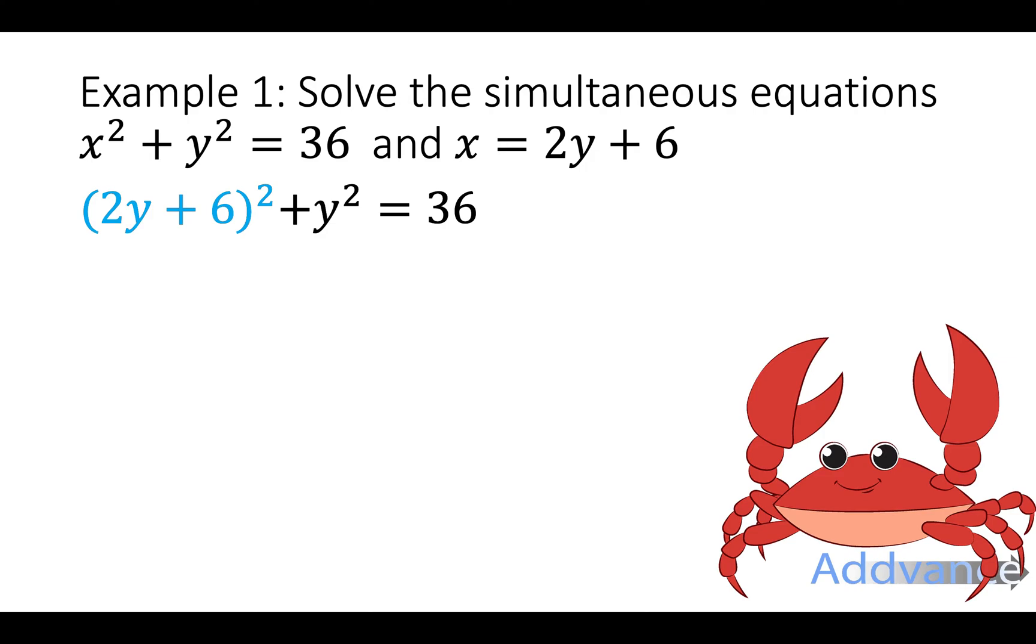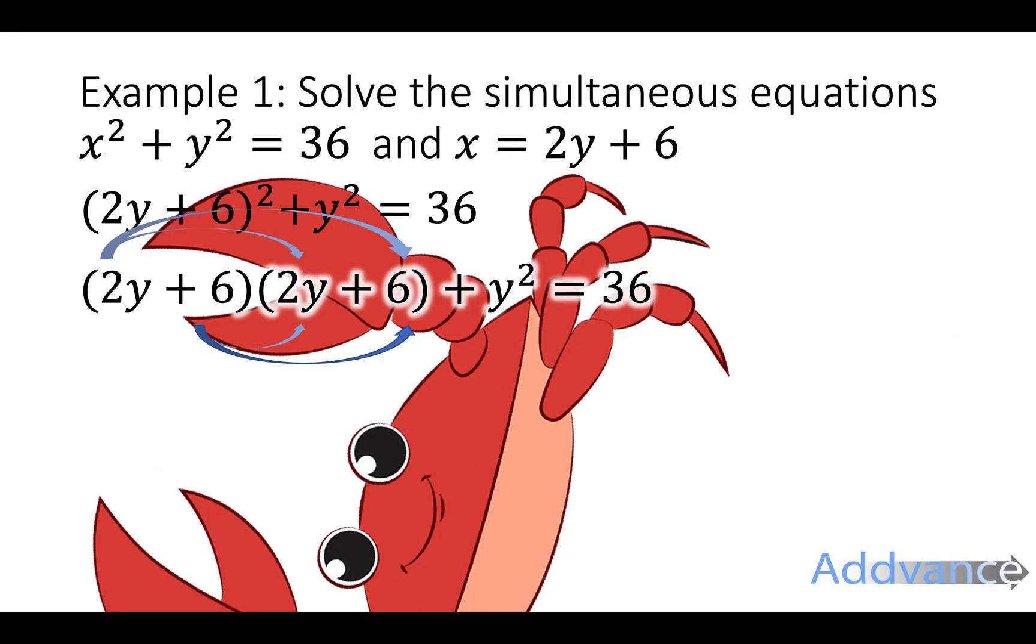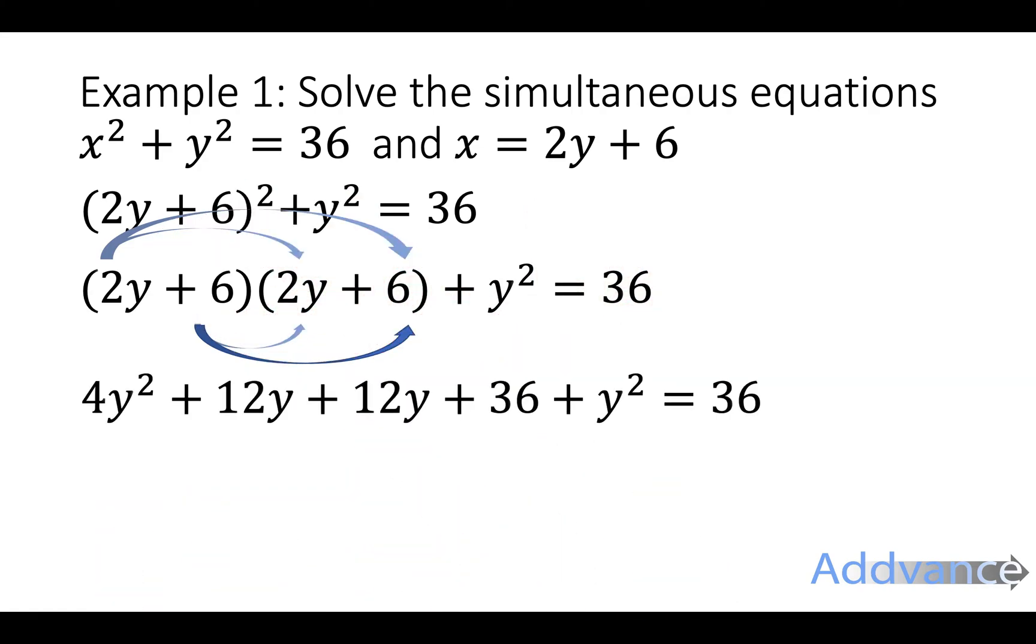And so we have a bracket that we're going to expand. So we use our crab claw method like this. And we're going to expand the bracket. We expand the bracket by doing 2y plus 6 times 2y plus 6 and we get 4y squared plus 12y plus 12y plus 36. And then the y squared and the y squared are the same. The 36 and the 36 are the same.